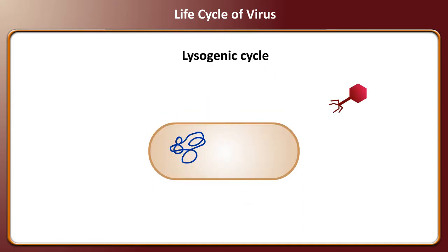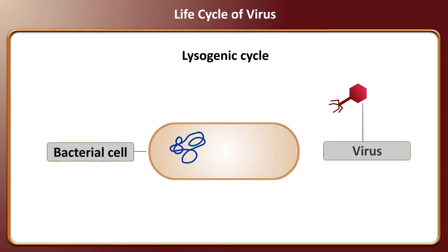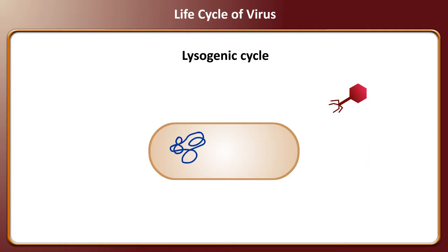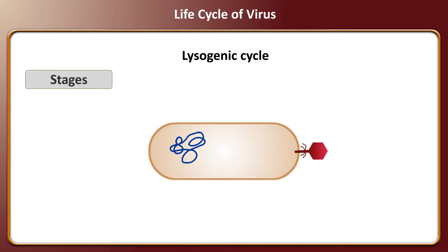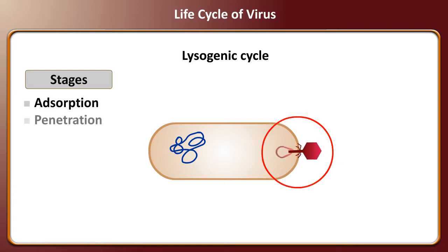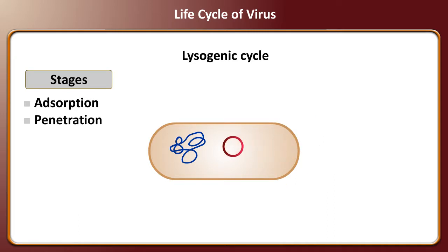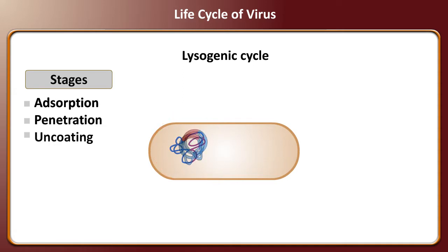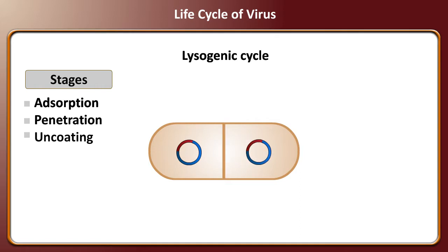In the lysogenic cycle, even after the viral DNA enters the bacterium, it continues to live and reproduce normally. The genetic material of the virus is transmitted to daughter cells at each subsequent cell division and can be released later.